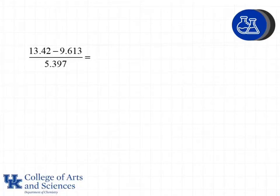First we're going to solve the numerator and we get 3.807. We need to go back to our original values, which was a subtraction problem. So we're going to base it on the number of decimal places for this portion and we see that we have two decimal places and three decimal places. Therefore our answer from this step should have two decimal places.